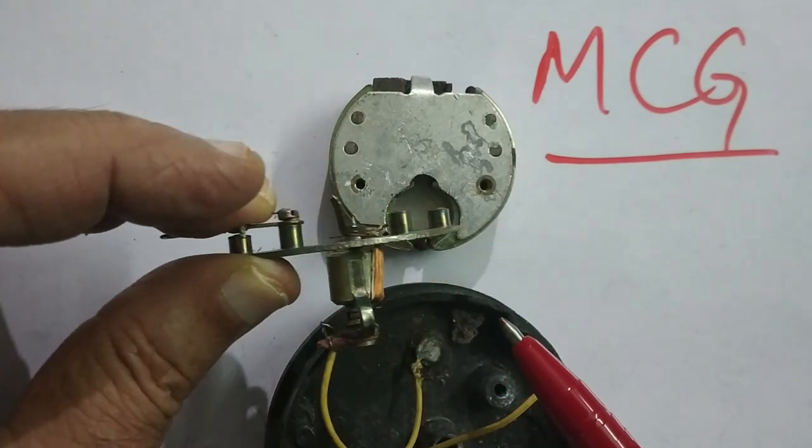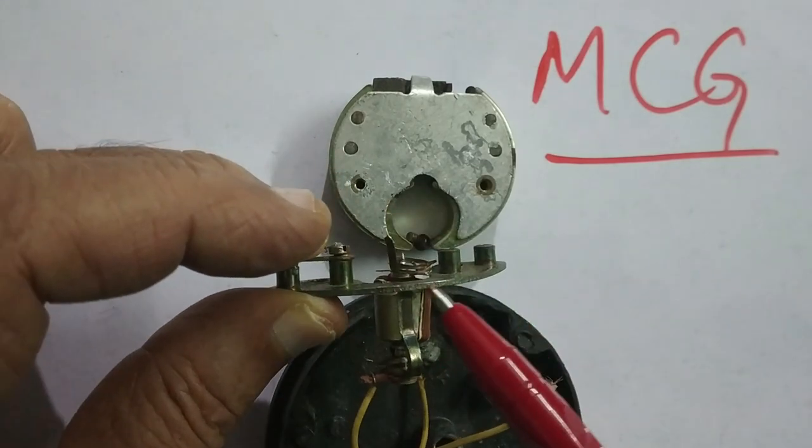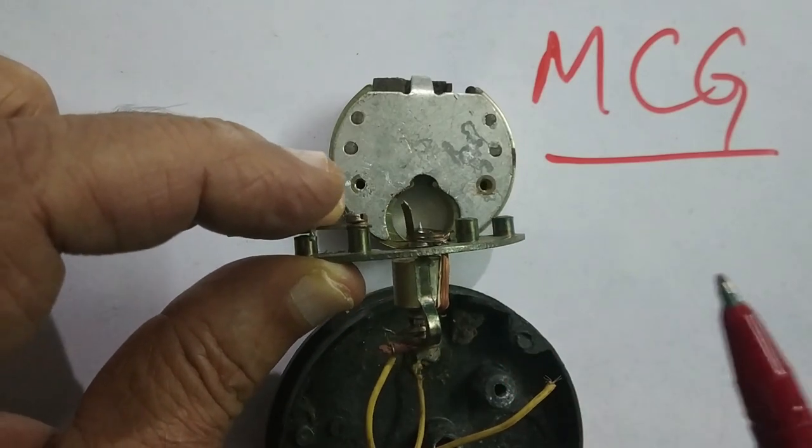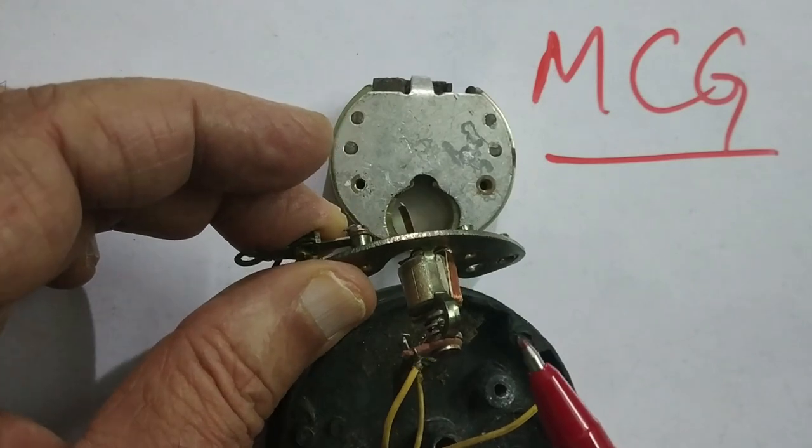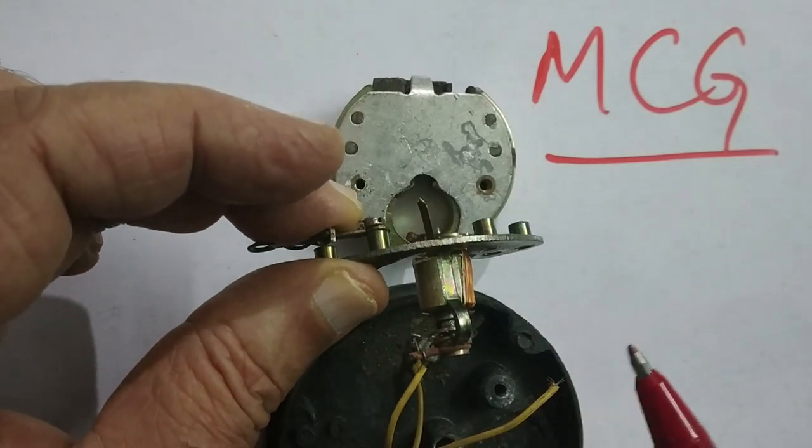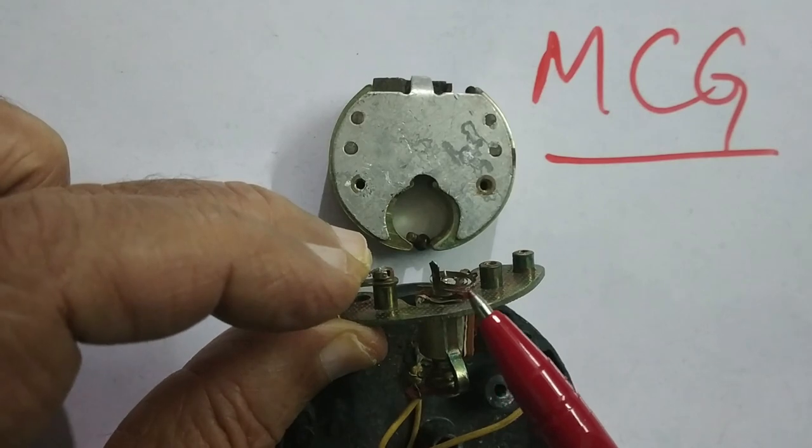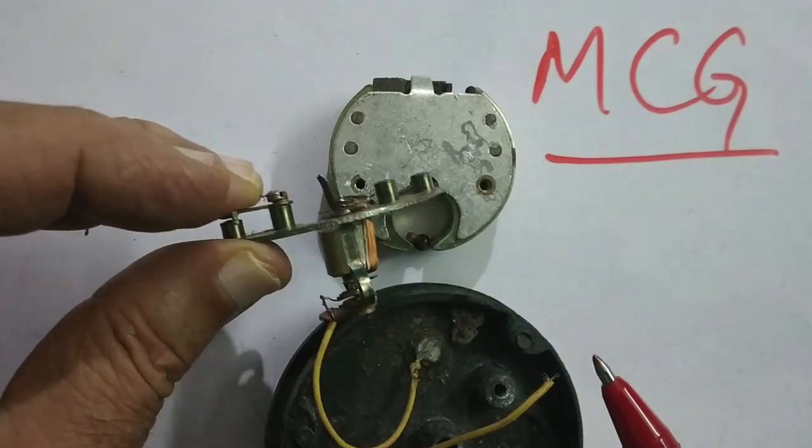Because of that, the spring will also be tightened and then, at the equilibrium position, the two torques—the torque provided by the current that is BINA sin θ—is equal to the torque provided by the hairspring.